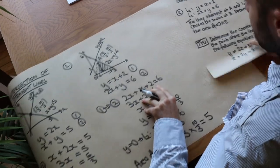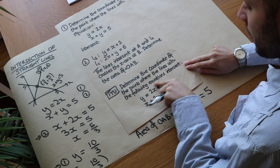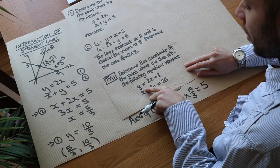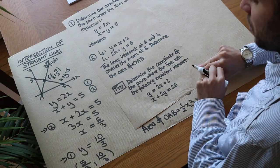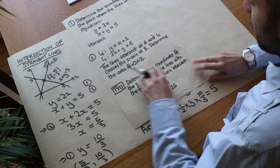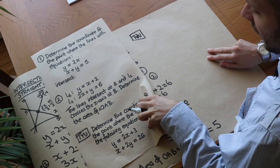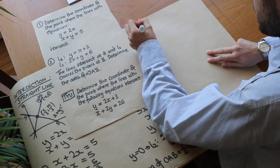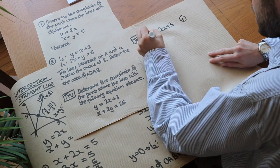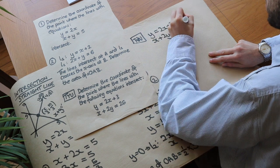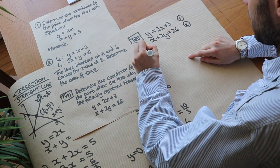Now for a final test question: determine the coordinate of the point where the lines with equations y equals 2x plus 3 and x plus 2y equals 26 intersect. You may want to pause the video to have a go. We have equation 1: y equals 2x plus 3, and equation 2: x plus 2y equals 26. Since y is already the subject in equation 1, we substitute into equation 2.